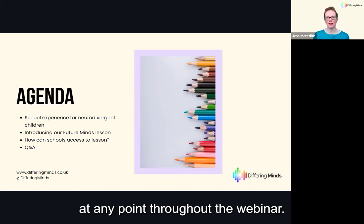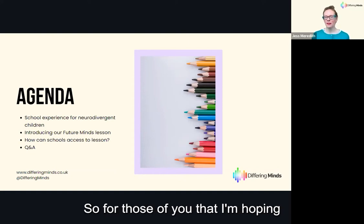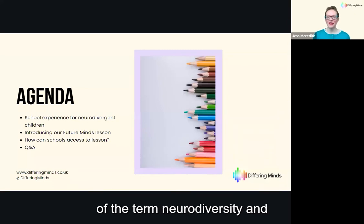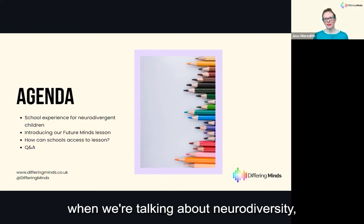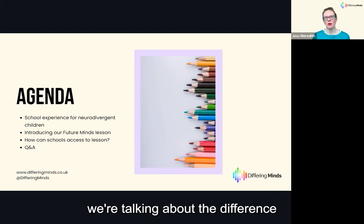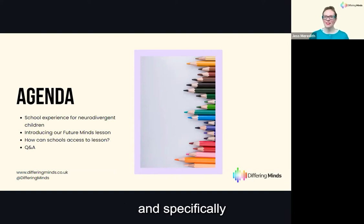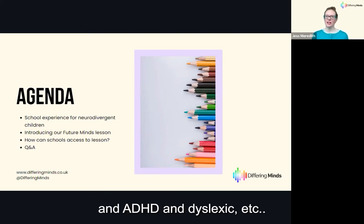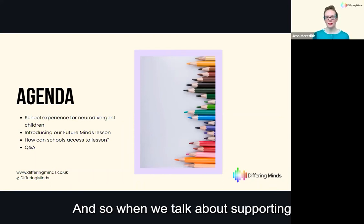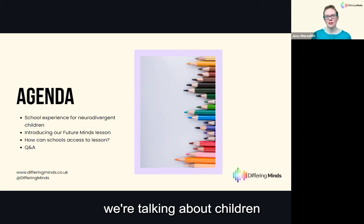For those of you who may not be familiar: when we're talking about neurodiversity, we're talking about the difference in our brains — specifically the difference that comes sometimes as a result of having a neurological condition such as being autistic, having ADHD, being dyslexic, and so on. When we talk about supporting neurodivergent children, we're talking about children who have those neurological differences.